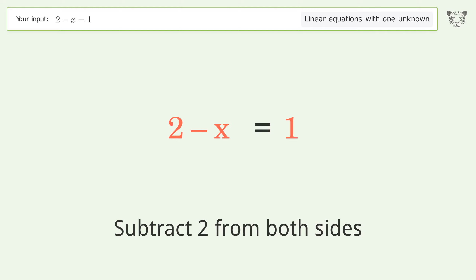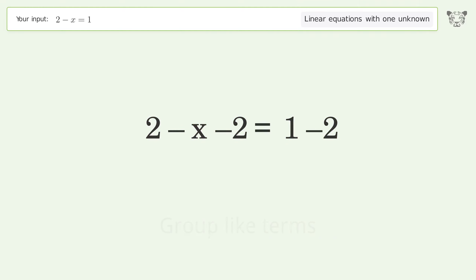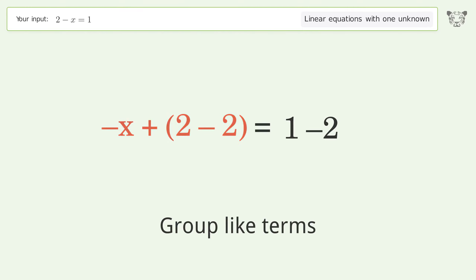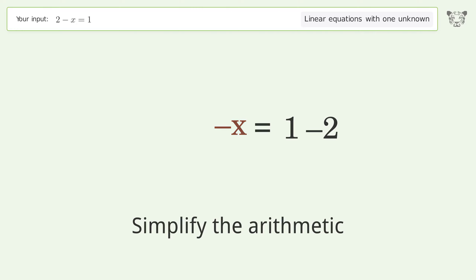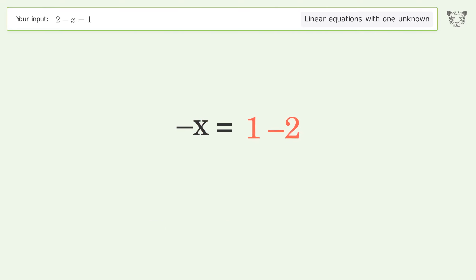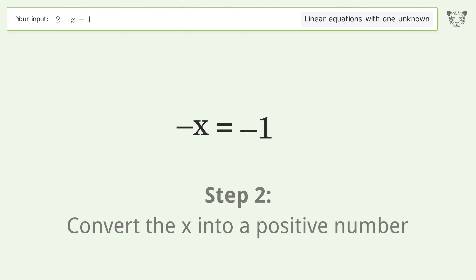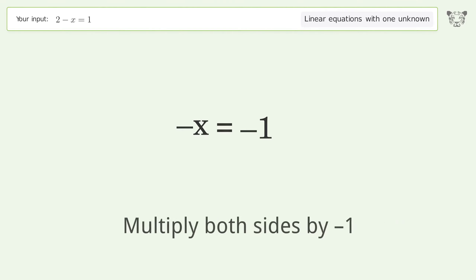Group like terms and simplify the arithmetic. To convert x into a positive number, multiply both sides by negative 1.